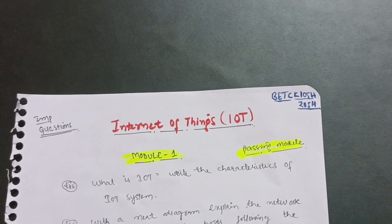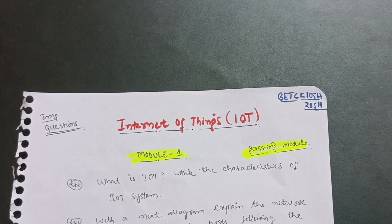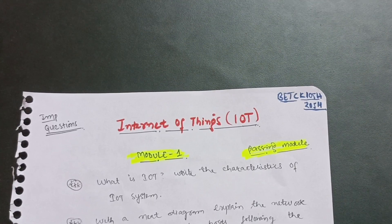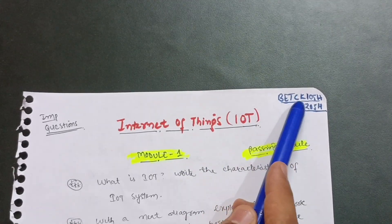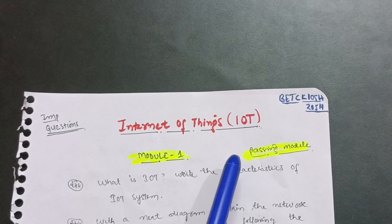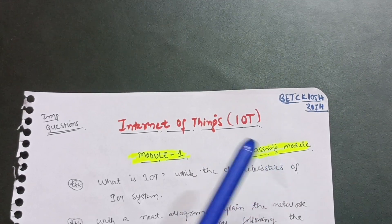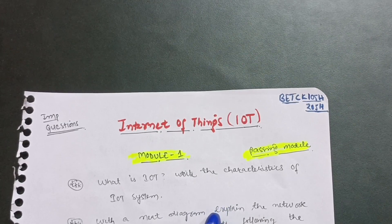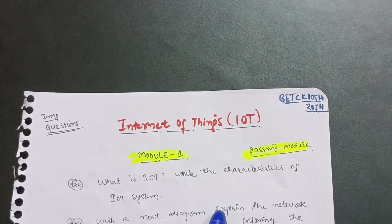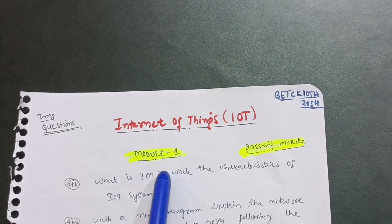Hello everyone, welcome back to my channel. Today I am with another passing strategy video, or you can say important questions video, for the IoT subject — Internet of Things. The subject code is BETCK105H or 205H. Without wasting any time, let me tell you that in this particular subject there are three passing modules by which you can easily score 50 marks out of 60, and I will also discuss the rest of the two modules.